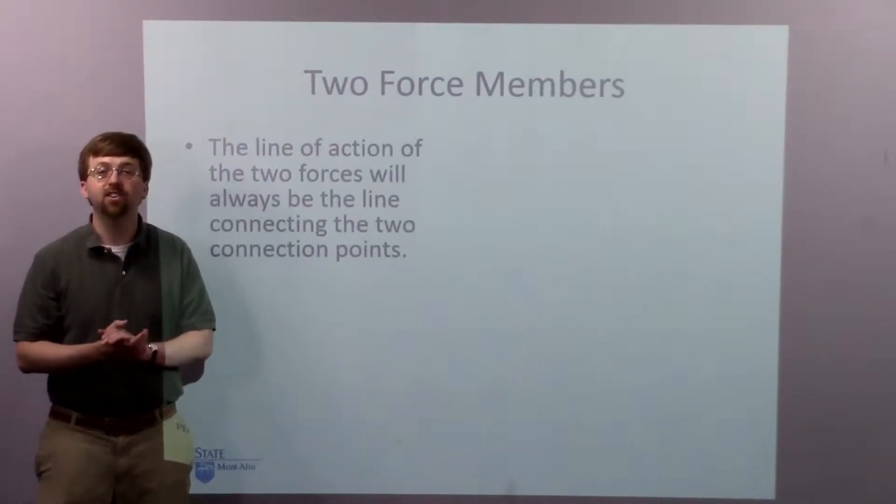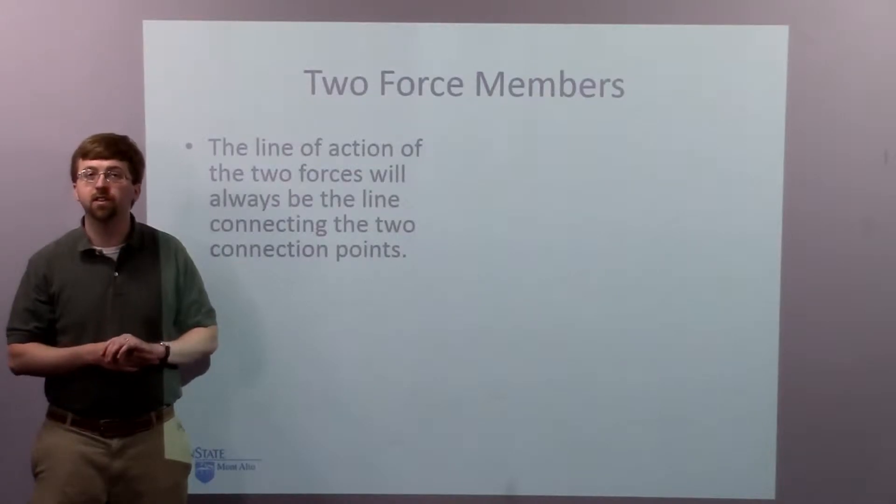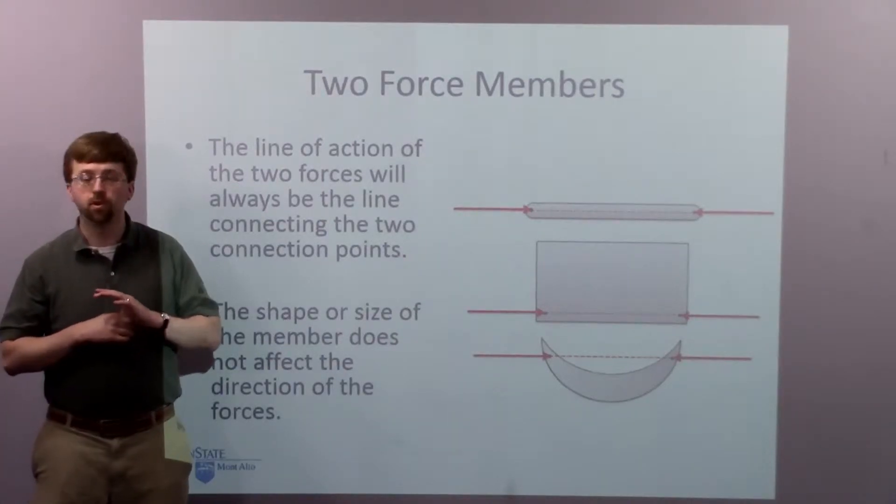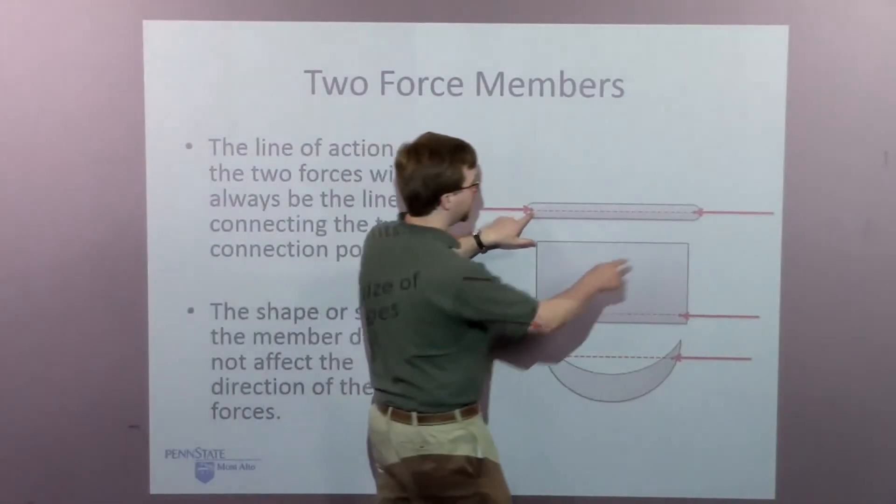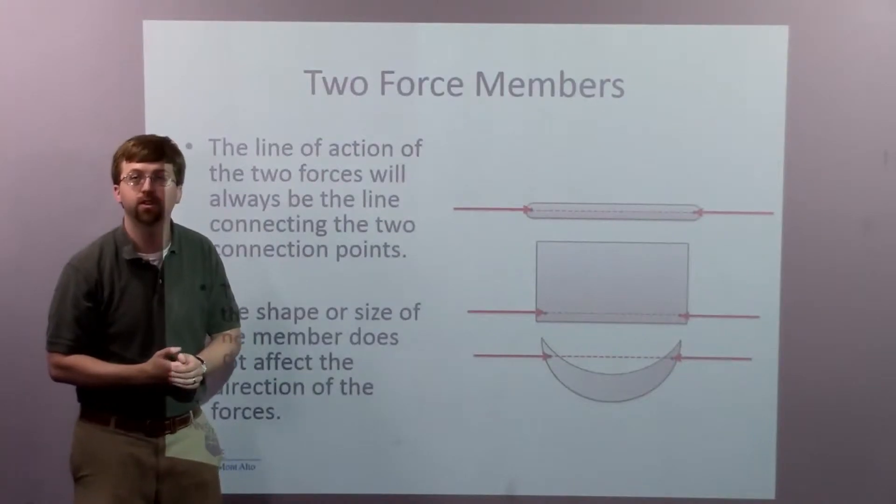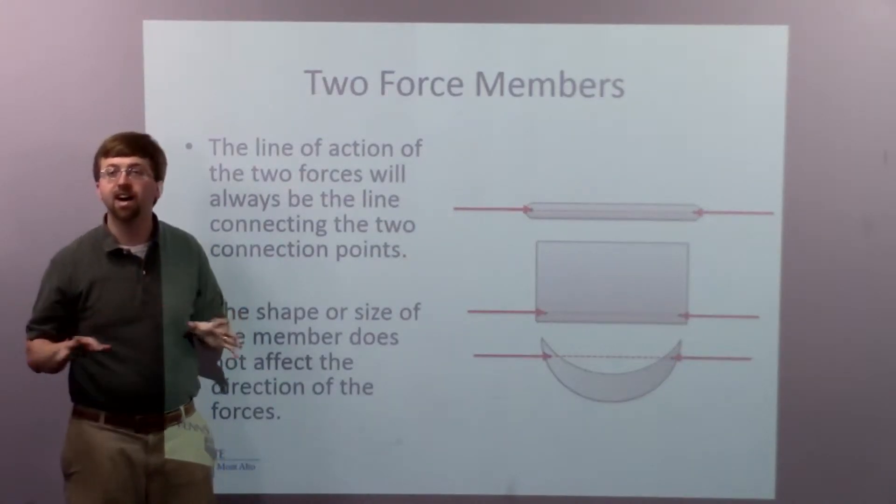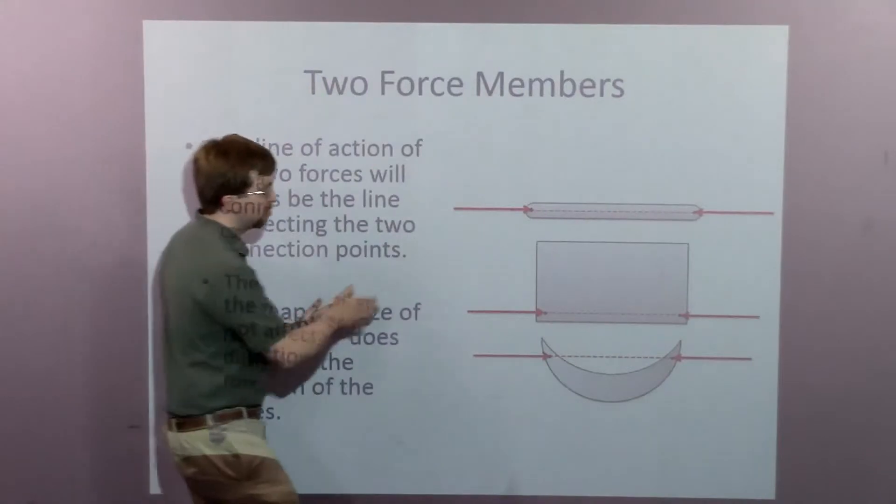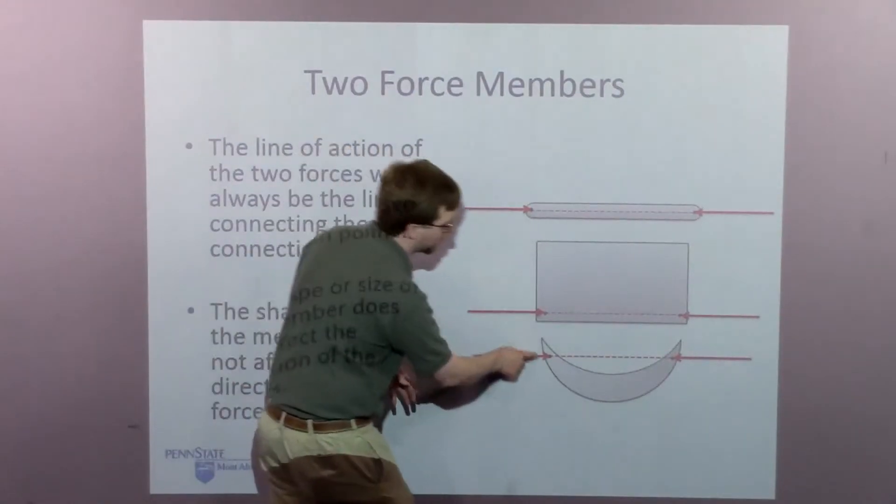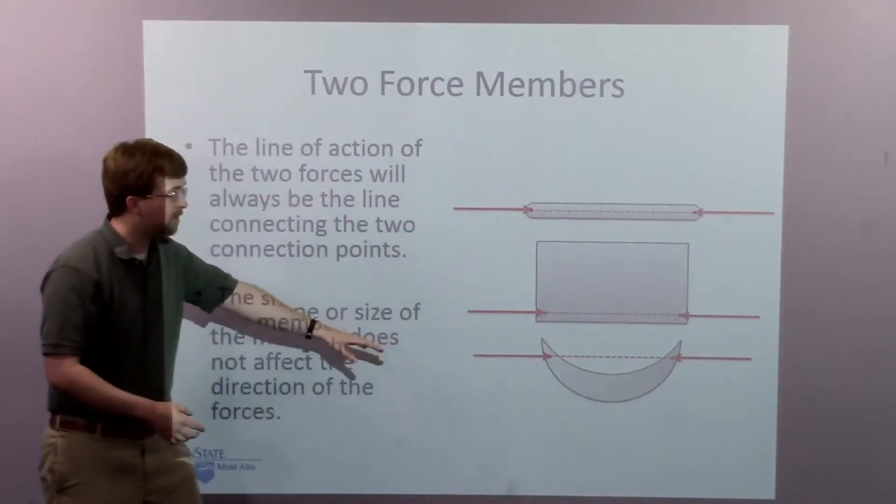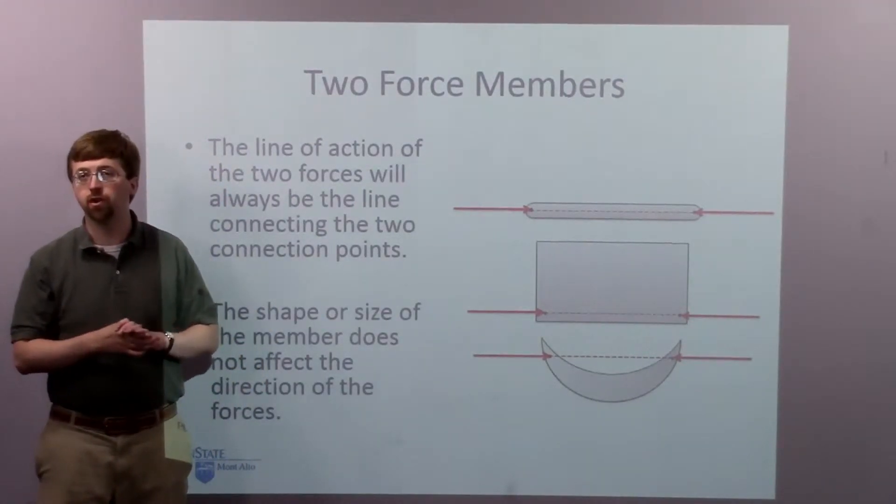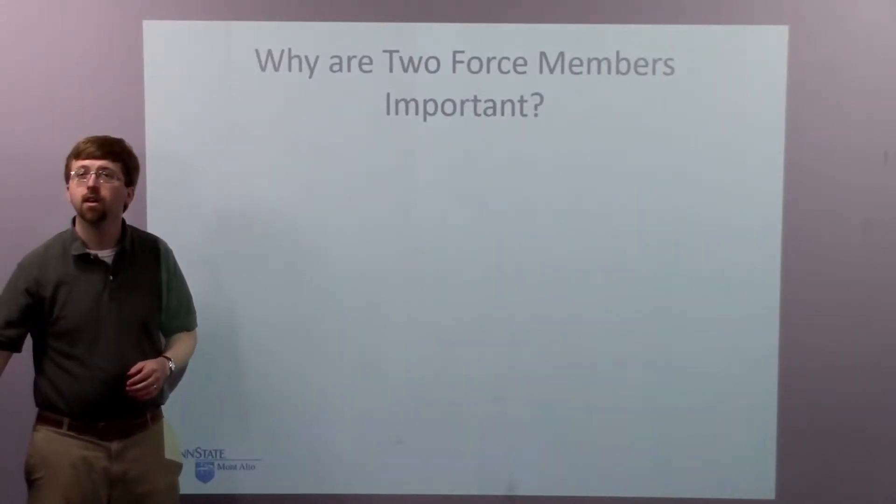This line of action, the line along which these forces are going to act, will always act along the connecting point between the two joints. If I've got joint one over here, joint two over here, that line connecting those two points, that's going to be my line of action for both the forces. It doesn't matter the size, the shape of the member. I could have kind of a big square beam like this. It's always going to be along that line connecting the two joints. Or I could have a curved beam like this. And this curved beam messes up a lot of people, but you need to remember that line of action. The only two points that matter are those joints, those two connecting points.